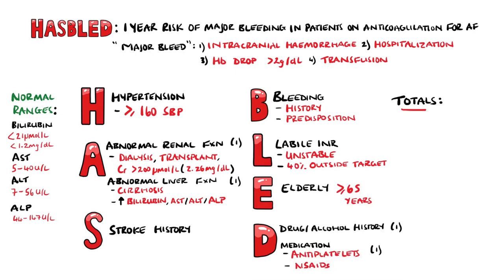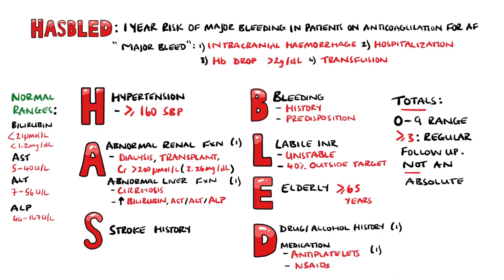In total, the HASBLED score ranges between 0 and 9. Scores of 3 or above are considered high risk and will need regular follow-up and review of their anticoagulation medication. Note this is not an absolute contraindication to anticoagulation. The score also highlights reversible causes of an increased bleeding risk, such as hypertension, a labile INR, and alcohol or medication use.